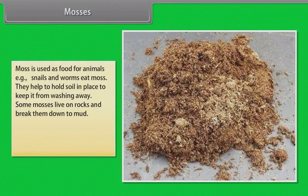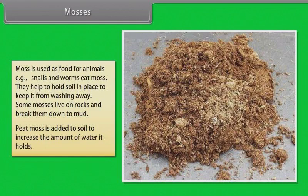Moss is used as food for animals, that is, snails and worms eat moss. They help to hold soil in place to keep it from washing away. Some mosses live on rocks and break them down to mud. Peat moss is added to soil to increase the amount of water it holds.